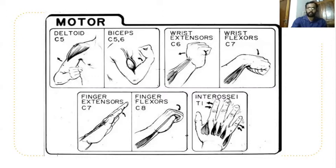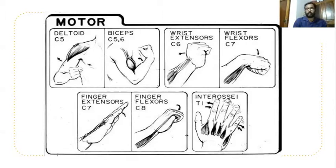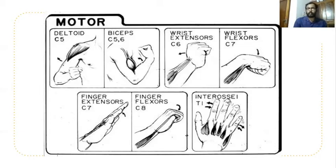Compare both sides to feel the difference in power for biceps. Biceps is innervated by both C5 and C6, mainly C6. Along with biceps, for C6, wrist extensors are also checked — ask the patient to extend or dorsiflex the wrist against resistance for C6 innervation.